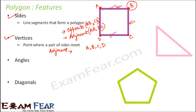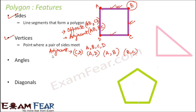For vertices, we also have adjacent vertices and opposite vertices. Adjacent vertices are those which have a common side and are located one after another. For example, C and D are adjacent vertices, A and D are adjacent vertices, A and B are adjacent vertices, and B and C are adjacent vertices. However, B and D are not adjacent — they are opposite vertices. Similarly, C and A are opposite vertices.